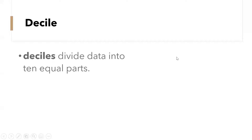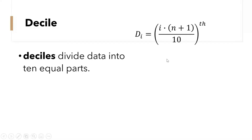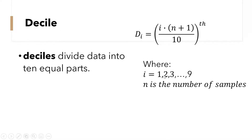Let's talk about decile. Decile divides data into 10 equal parts. This is the formula for finding the decile, where i is equal to 1, 2, 3, up to 9. This stands for decile 1, decile 2, decile 3, up to decile 9. And 10 is the number of samples.